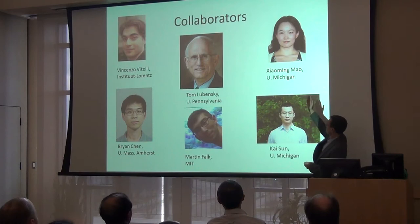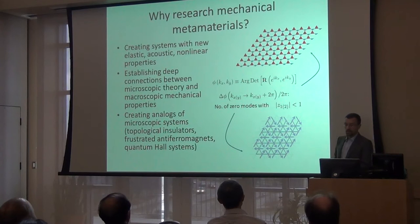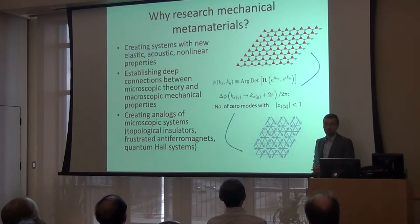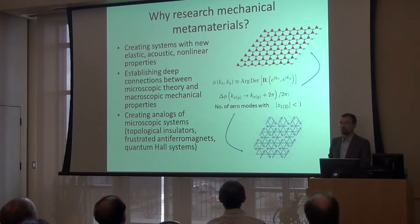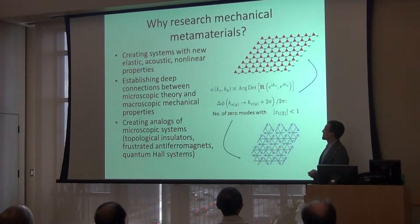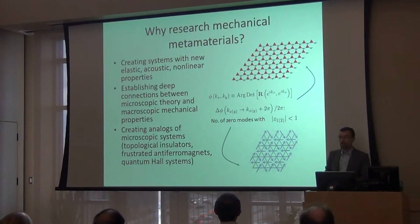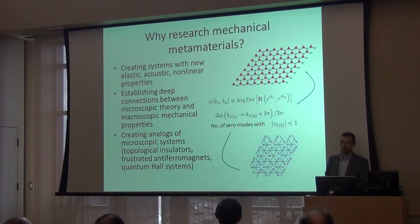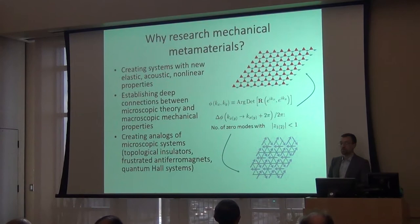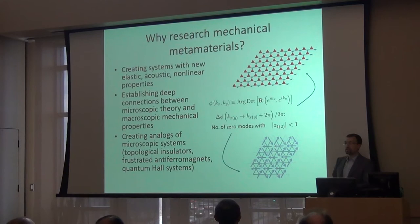John McMahon at Michigan. Why are we looking at mechanical metamaterials? What we're trying to do is create systems with new elastic, acoustic, and nonlinear properties. We're going to see that we can establish deep connections between these macroscopic properties and the microscopic theory — the topological invariants. There's a connection we can draw between these mechanical models and other microscopic systems, such as topological oscillators, frustrated antiferromagnets, and quantum Hall systems. If you look at the formalism abstracted from the actual degrees of freedom, the math is the same, and that tells us that some of the physical behavior is the same as well.